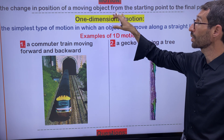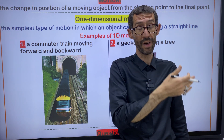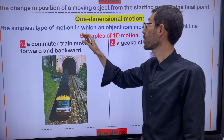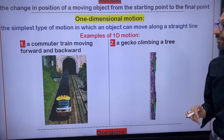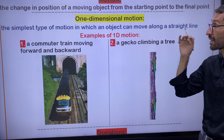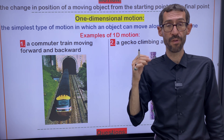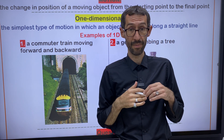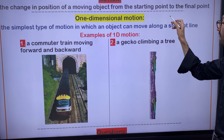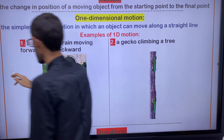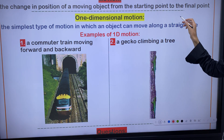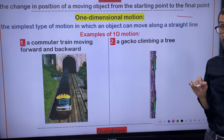So motion means changing the position of an object from the starting point to the final point. One-dimensional motion is the simplest type of motion in which an object can move along a straight line. One-dimensional motion means the object only moves in a straight line. One dimension means a straight line, like this — this line is one-dimensional.